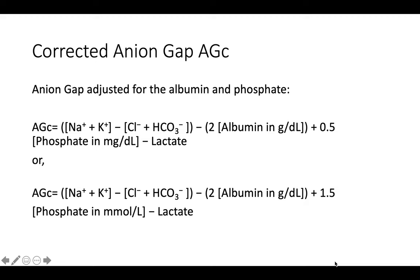The corrected anion gap (AGc) accounts for albumin and phosphate. The formula is: AGc = (sodium + potassium) minus (chloride + bicarbonate) minus 2 × albumin in g/dL, plus 0.5 × phosphate in mg/L (or 1.5 × phosphate in mmol/L), minus lactate. Potassium is included here because it becomes important especially in renal failure. This is the adjusted or corrected anion gap.